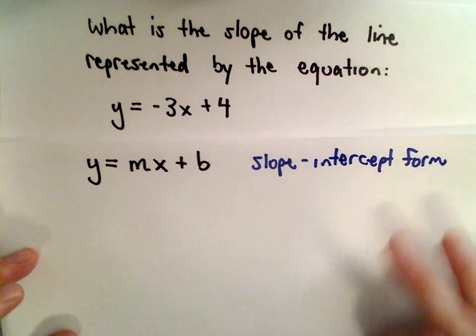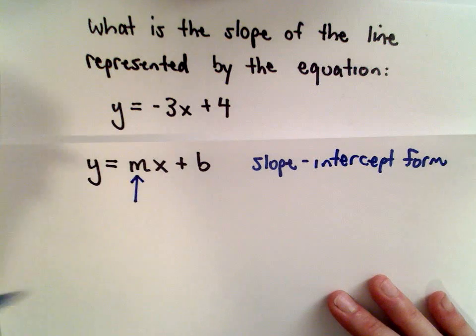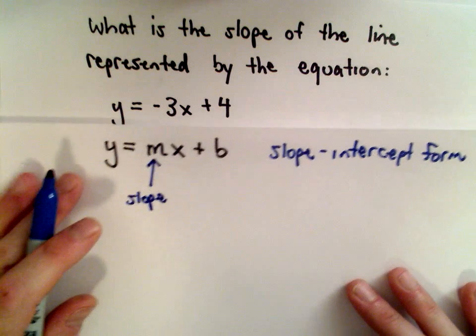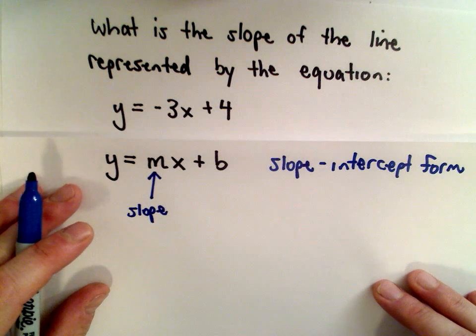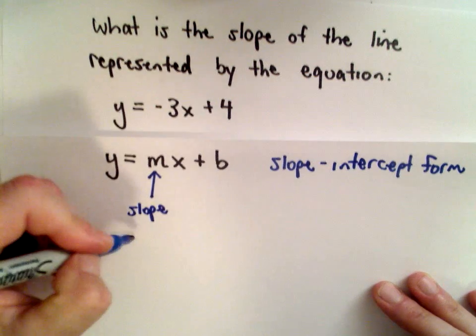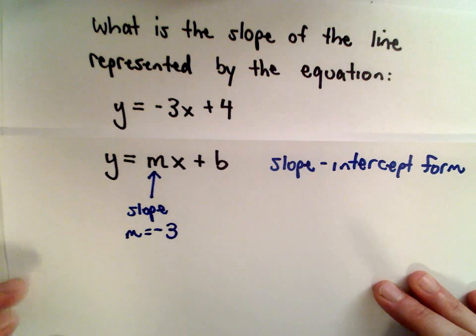The reason why it's called that is whatever number's in front of x, we label it as m, that's going to be the slope of the line. So in this problem, without really doing too much, if I knew this slope-intercept form, I could say the slope of the line is going to be equal to negative 3. And I'm done, I can go on to the next problem.